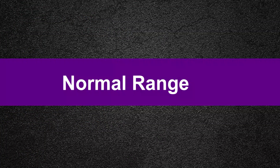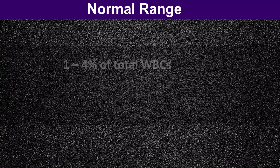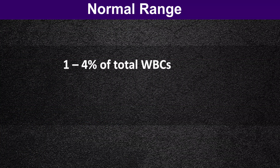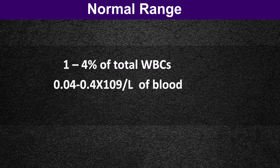The normal range for eosinophils usually accounts for one to four percent of total white blood cells, which means 0.04 to 0.4 × 10⁹ per liter of blood.